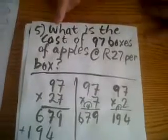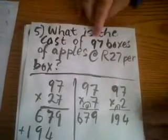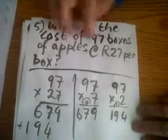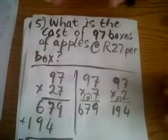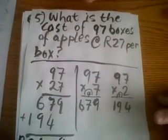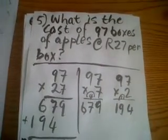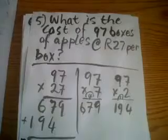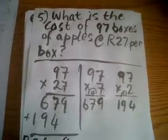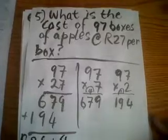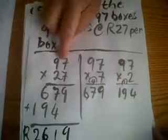Okay, what is the cost of 97 boxes of apples at 27 rand per box? Immediately you must know you must multiply. If I ask you what is the cost of one, if 10 costs that, then you must divide. But if I ask you the cost where one costs so much, then you must multiply. 97 times 27, you have the same similar example as previously.